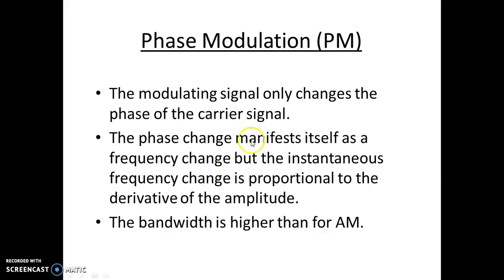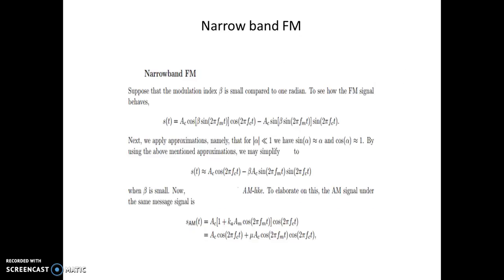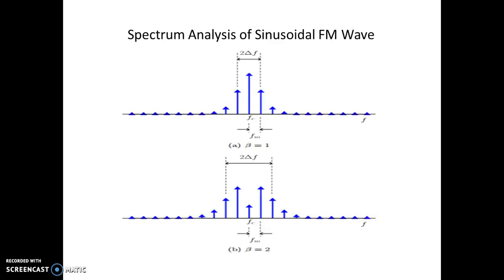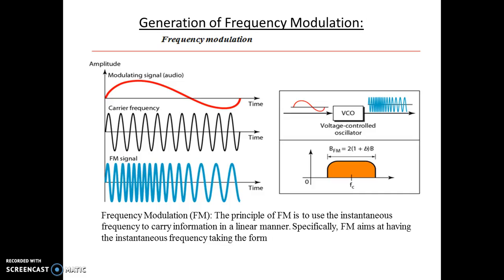In the last video we saw frequency modulation — how it is generated. In frequency modulation, the frequency of the carrier is changed in accordance with the amplitude of the message signal. The message signal is applied to the VCO. As we saw in the previous slide, this is how frequency modulation is generated.